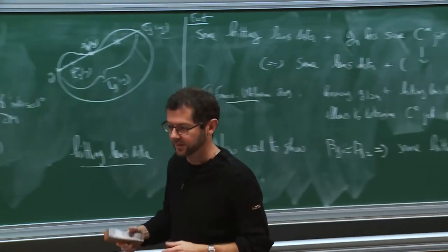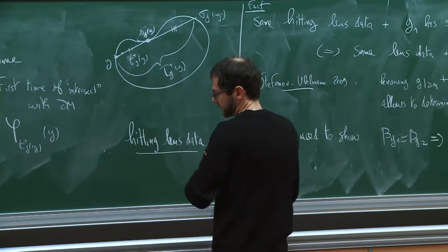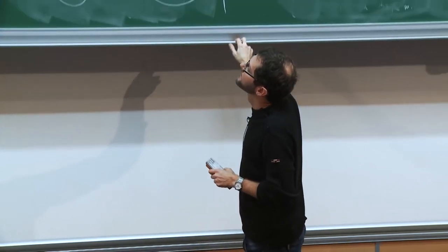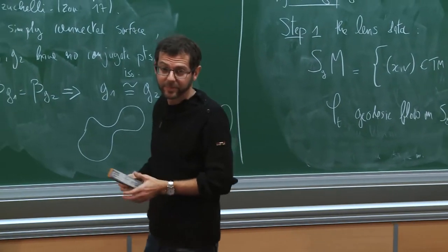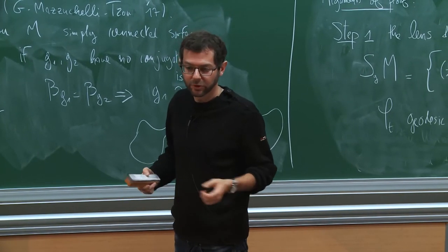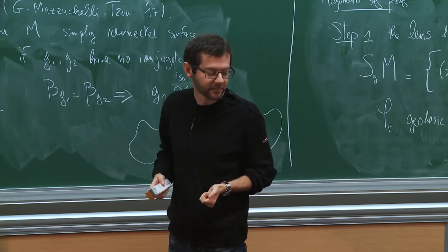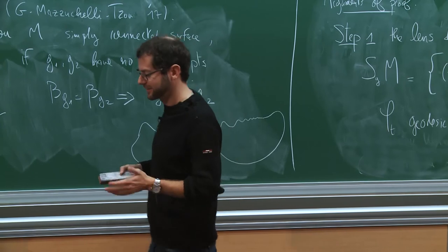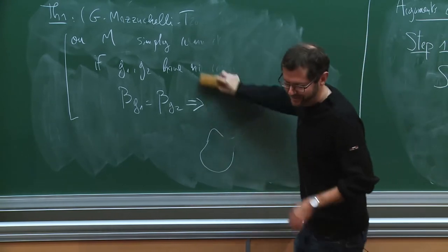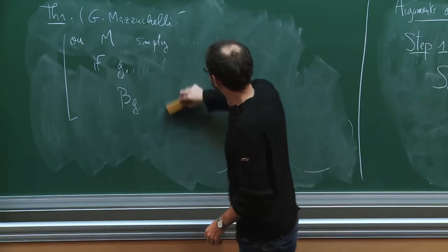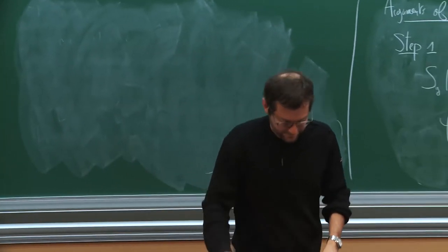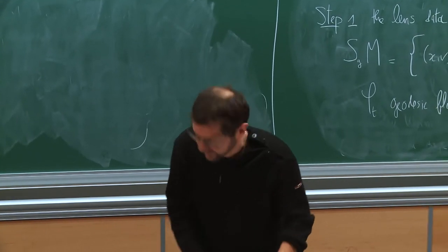Now we have to work with this lens data. The second result concerns the lens data, and the strategy is to use the Pestov-Uhlmann method, because that's the only way we know how to deal with curvature that is not non-positive. The double negation is always complicated for French.